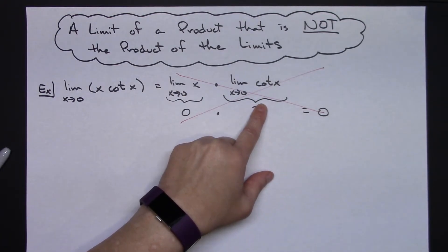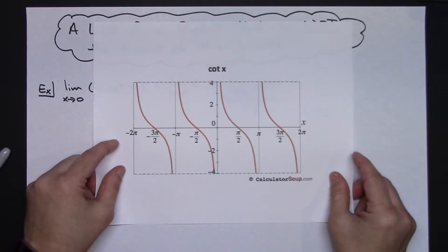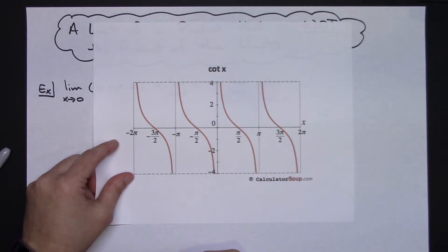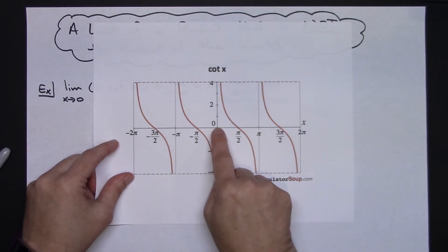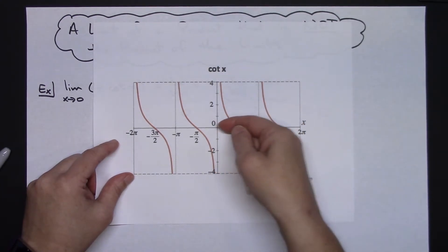The easiest way to look at that would be to take a look at the graph. Here's the graph of cotangent of x. And as x is approaching 0, as I come from the right, it is positive infinity. As I come from the left, it's negative infinity.